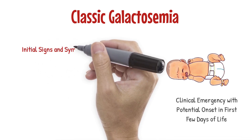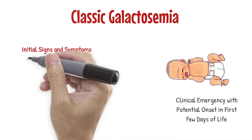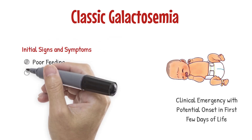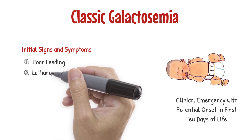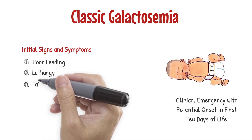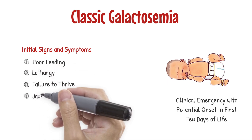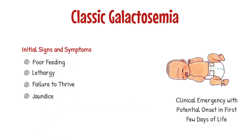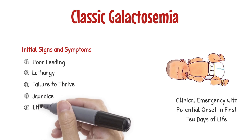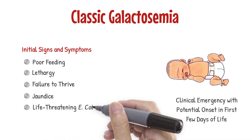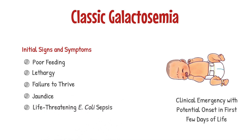Early signs of galactosemia include poor feeding, lethargy, failure to thrive, and jaundice. Neonatal E. coli sepsis can also occur and be life-threatening.